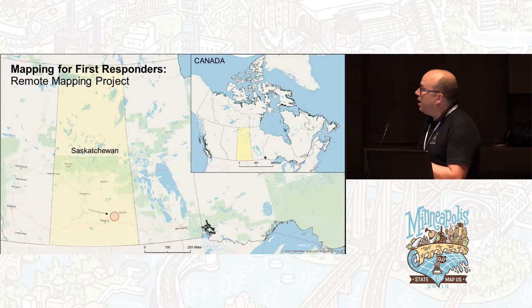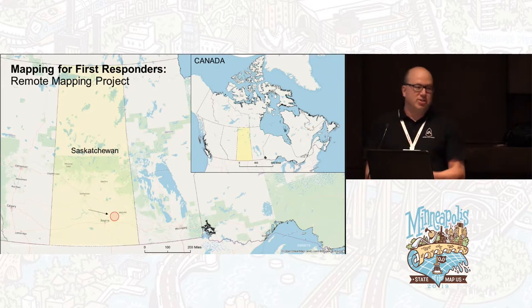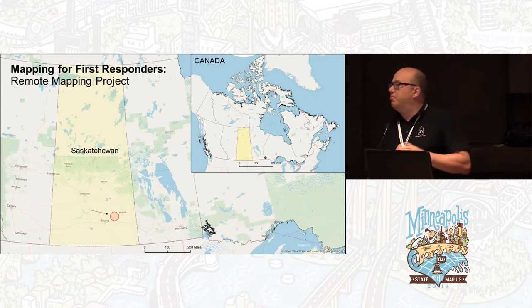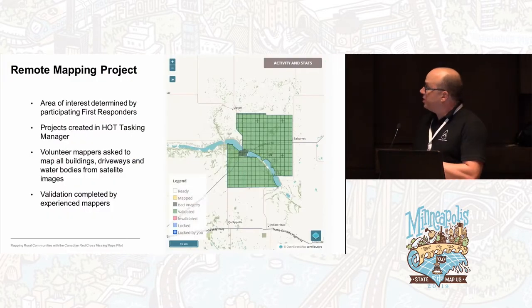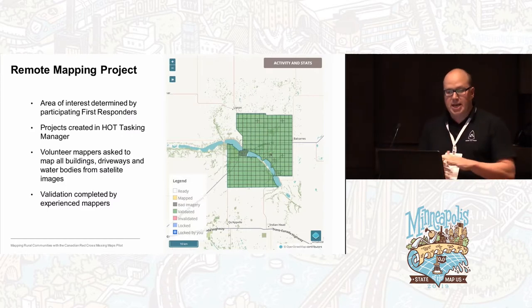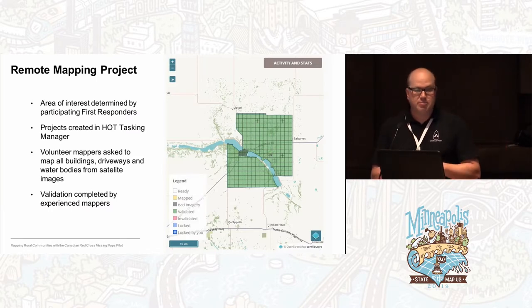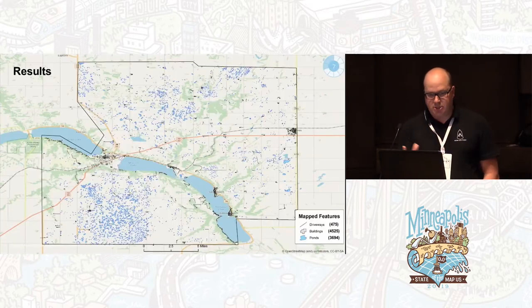One completed project is in Saskatchewan, where one of our Red Cross volunteers is also a volunteer firefighter. They said it would be great if we knew where all the little bodies of water — ponds — are, so that if there's a fire, we know where the water sources are to fight it. We talked to some communities, used the task manager, and asked volunteers to do remote mapping — we didn't actually go on site. Looking at satellite images, we mapped buildings, driveways (which can be really long in a prairie area), as well as the water bodies. Then lots of validation.